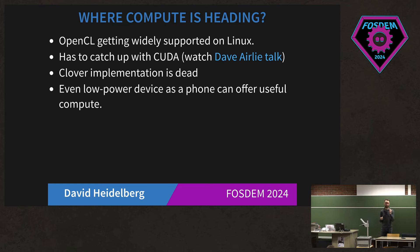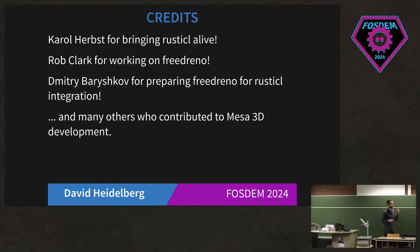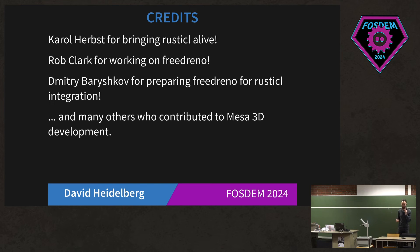The last thing I want to point out is that even a low-power device like a phone can provide nice acceleration with OpenCL, and the difference is really visible. A few credits: Carol Herbst for bringing RustiCL alive — that was a very nice project, integrating Rust-based software into Mesa, which is C and C++ based, a pretty challenging task. Rob Clark for working on FreeDreno — if there are any OnePlus 6 users here, you know the GPU works pretty well on those devices, so a lot of that is his work. And Dimitri Varyshkov for preparing the merge request for FreeDreno on RustiCL — not merged yet, but pretty close, needs some polishing.